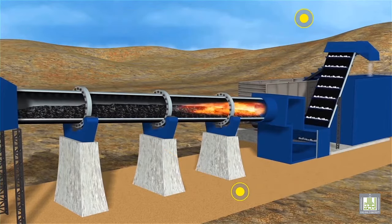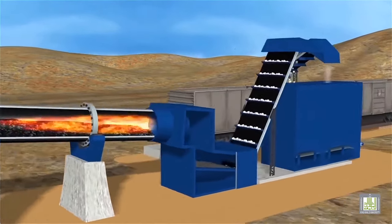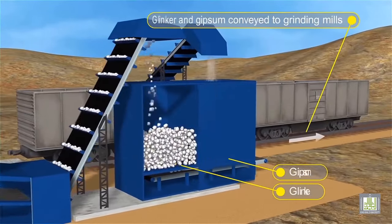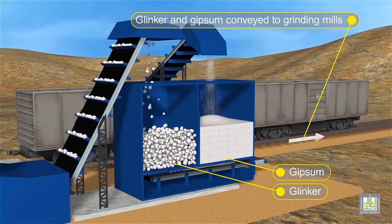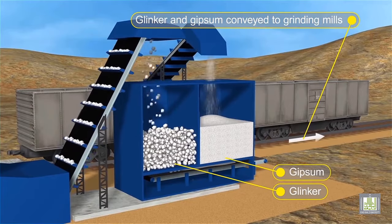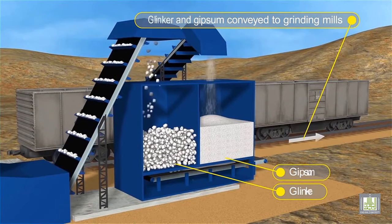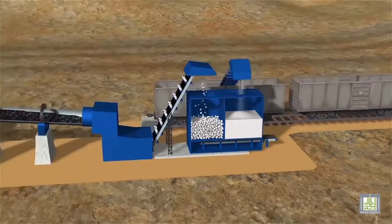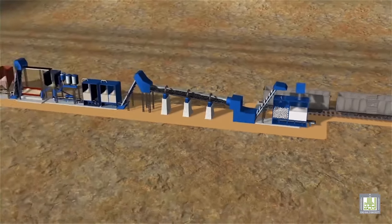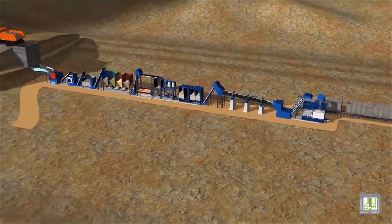This is known as dry process technology because no water is added to the ground raw materials. It is the process used by modern cement manufacturing plants.